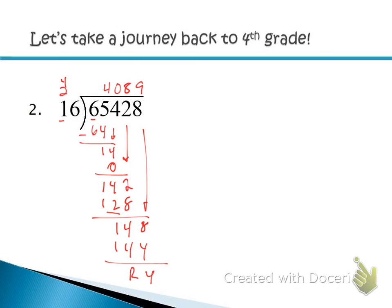There are two ways to write that: you can put R4 for remainder 4, or write it as a mixed number — 4,089 and a fraction where the remainder goes in the numerator and what you're dividing by goes in the denominator, reducing to 4,089 and one-fourth. It's this second way — writing a mixed number — that we're going to carry over into polynomial division.